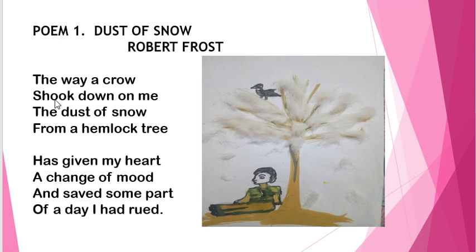The way a crow shook down on me the dust of snow from a Hemlock tree. In the first stanza, both the symbols — the crow and the Hemlock tree — have been used here, and dust of snow is also a significant symbol used in line number three. Here we can see that the poet was in a sad mood, feeling melancholic, and that's why he chose to sit under the Hemlock tree, which is associated with poison, death, and bad omen.